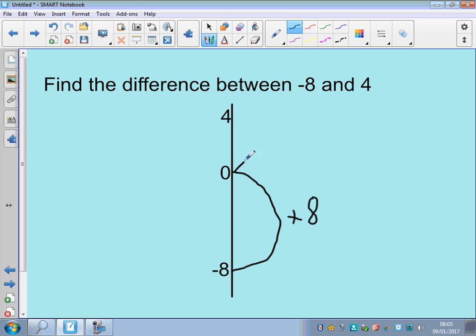Then, when you're at the 0, how many do you need to add on to get to the 4? Well, we needed to add on 4.